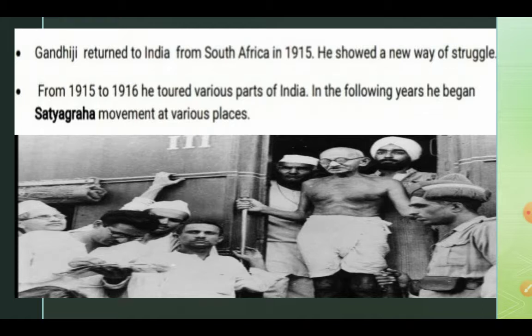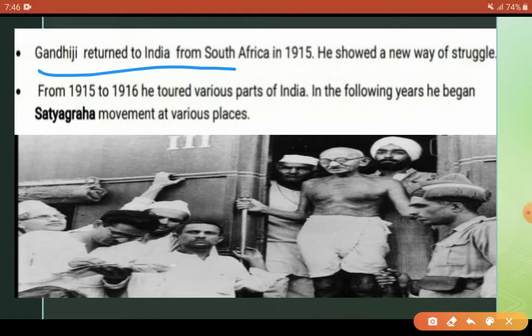Gandhi ji returned to India from South Africa. He had gone to South Africa to practice as a barrister — a lawyer. It was there that he first applied his theory of non-violence. In 1915, he came back to India from South Africa and saw that the people here were suffering greatly and the British were exploiting them a lot.